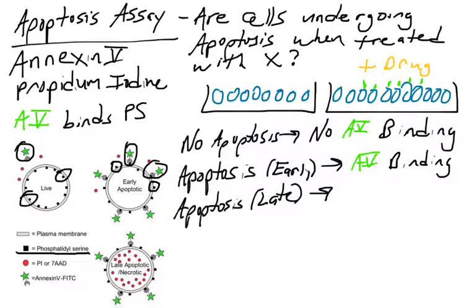In a later step of apoptosis, something else occurs, and that involves this other molecule that we add to the cells called propidium iodine. What's propidium iodine? It is a molecule that binds and intercalates into DNA, and it glows. If you look here in the cartoon, propidium iodine is this red circle.